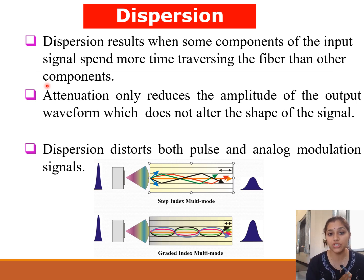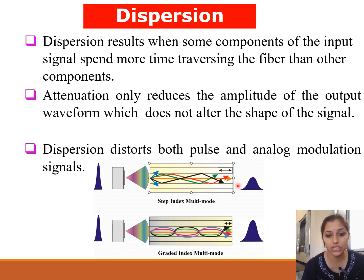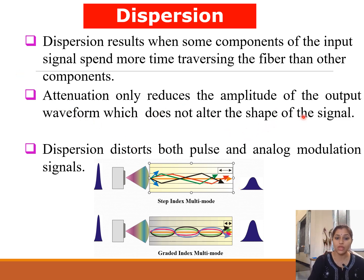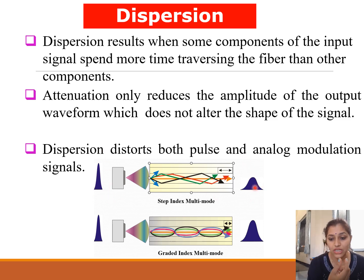Next is dispersion or distortion. Dispersion results when some components of the input signal spend more time traversing the fiber than other components. Attenuation only reduces the amplitude of the output, whereas dispersion distorts both the pulse shape and the amplitude. Here you can see this is the input pulse, and at the output the amplitude is reduced as well as the pulse is broadened.